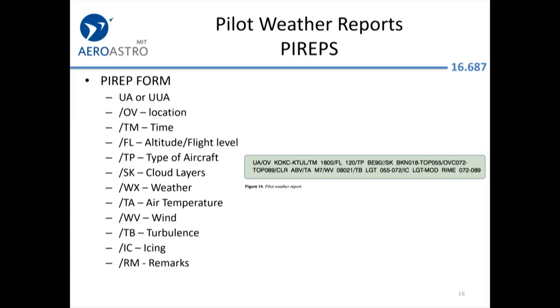Another type of weather report is a PIREP or pilot report. This is where a pilot flying wants to report conditions — turbulence or icing are frequently reported. You can actually report one yourself. During flight instruction, if you notice wind shear, turbulence, or icing, try to provide your own PIREP. It will ask for your location, the time, the altitude, and the type of aircraft — that's really relevant because wind shear experienced by a small Cessna is one thing, but if a large jet is having trouble with it, you're definitely going to have trouble with it.